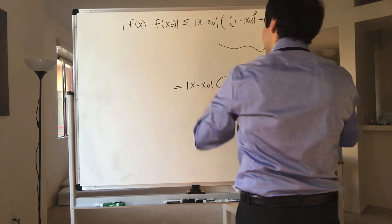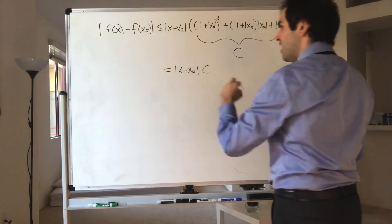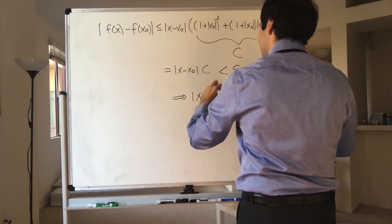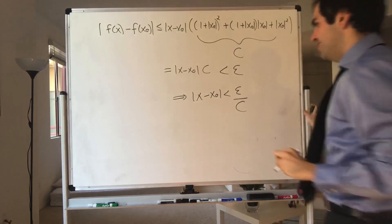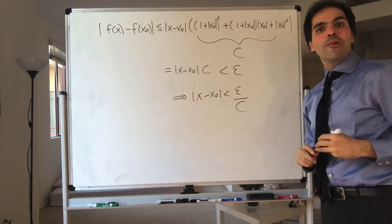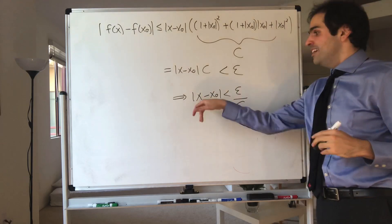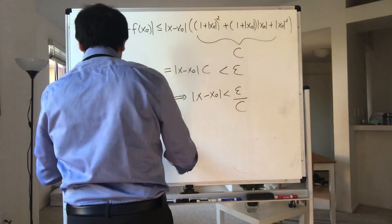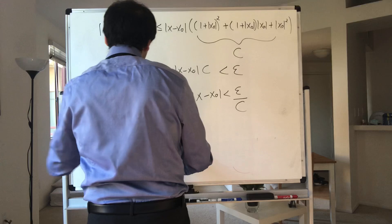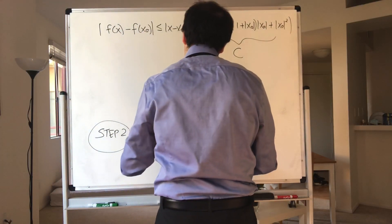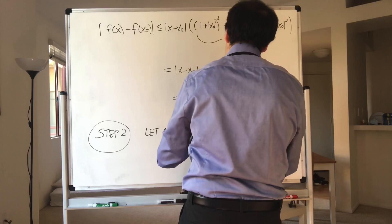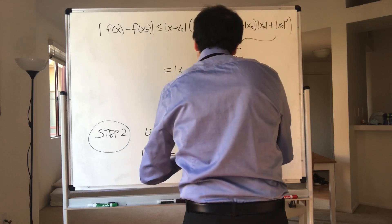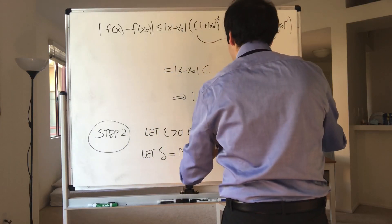So this is x minus x naught times c. Now we just need this to be less than epsilon, and therefore we get x minus x naught less than epsilon over c. This is our delta — except remember, we also need delta to be less than 1, because we want x minus x naught to be less than 1. So now we can do our actual proof. Let epsilon be given, and let delta be the smaller one of 1 and epsilon over c.